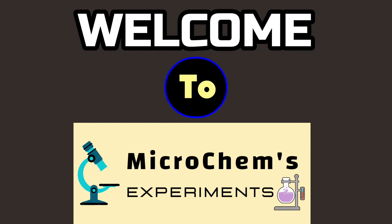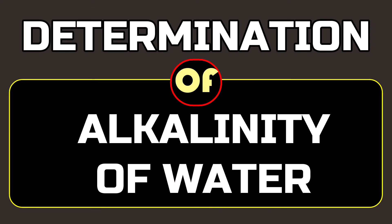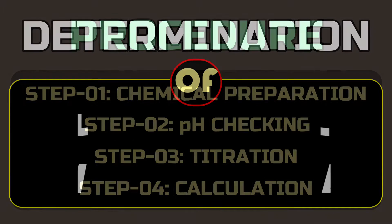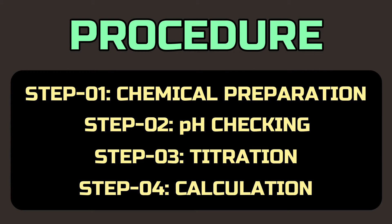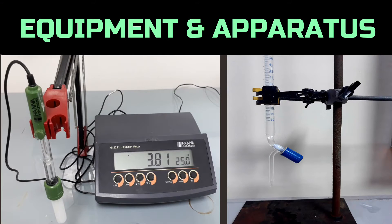Hello viewers, welcome to Microchimes Experiments. Today we are going to analyze a water sample to find the alkalinity. This method involves four steps: chemical preparation, pH checking, titration, and calculation.